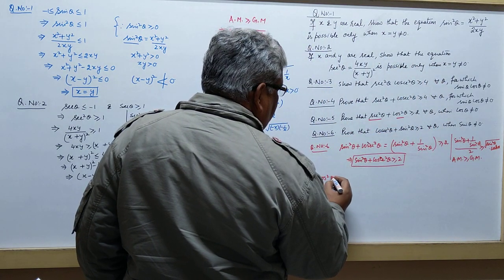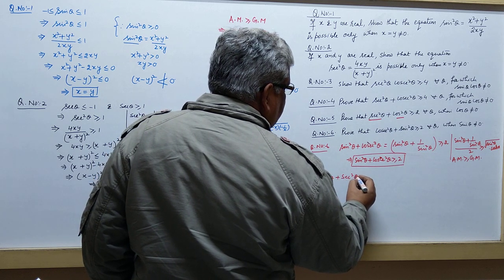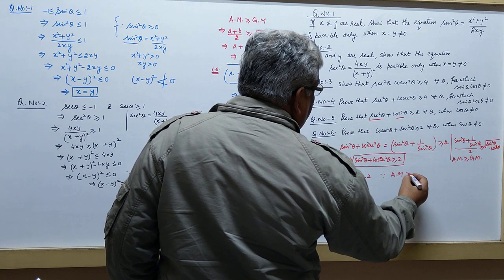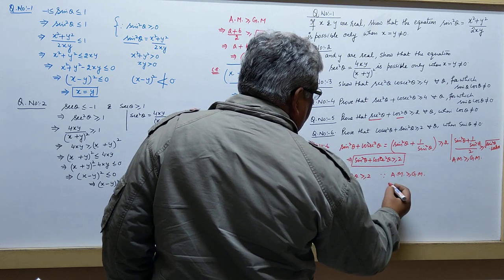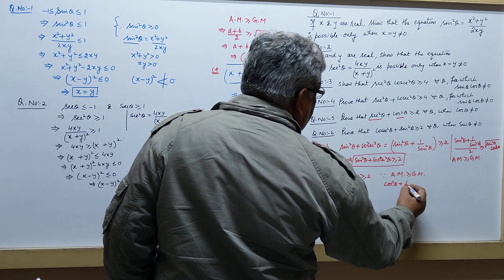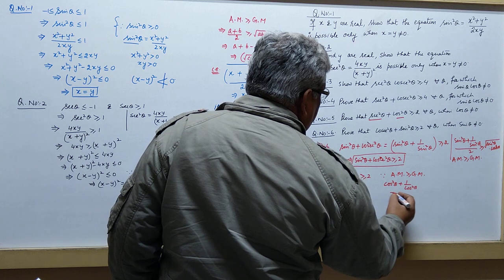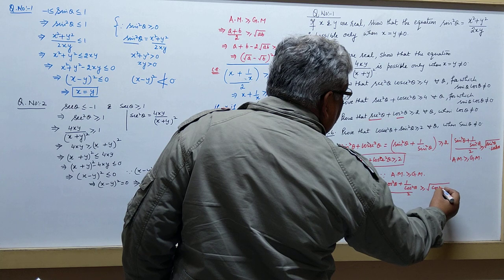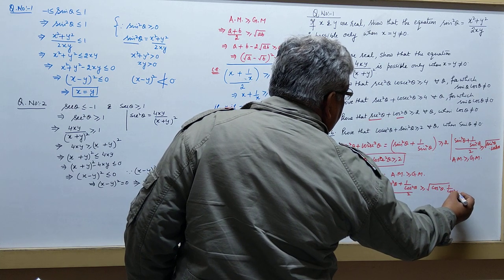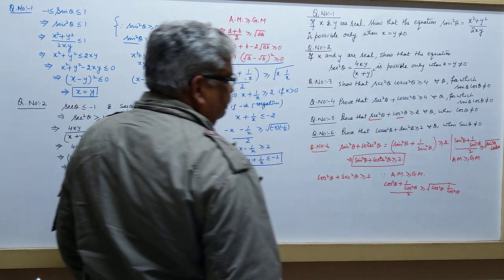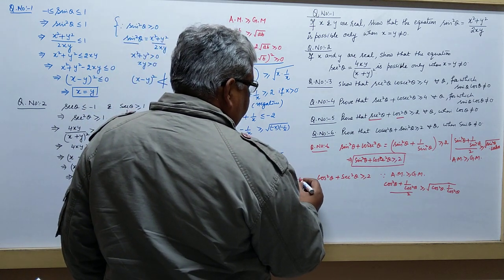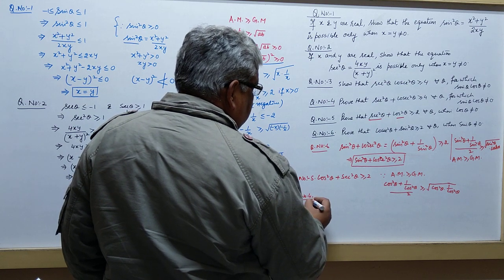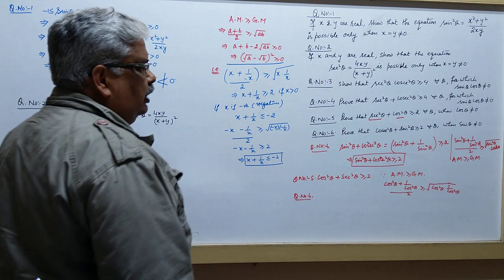Similarly, cos squared theta plus secant squared theta is greater than or equal to 2, because by AM-GM, cos squared theta plus 1 by cos squared theta divided by 2 is greater than or equal to under root of cos squared theta times 1 by cos squared theta. Secant is the reciprocal function of cosine.